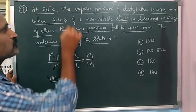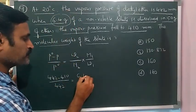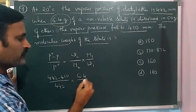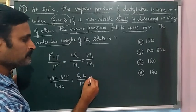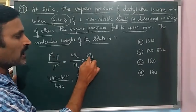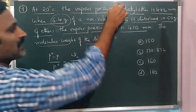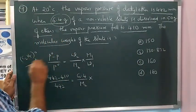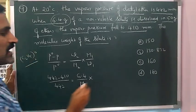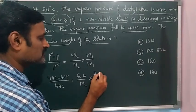Coming to weight of solute, in the question they have given 6.4 grams. We don't know the molar mass of solute, so you can consider as M2 only, into molar mass of diethyl ether. Diethyl ether formula is C2H5 twice O. Its molar mass if you calculate will become 74.